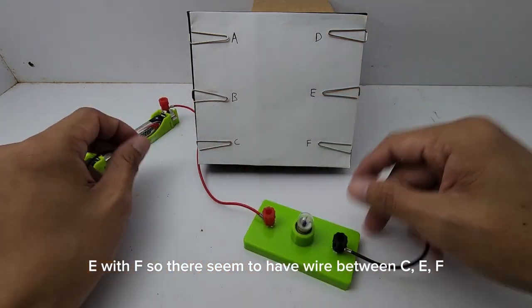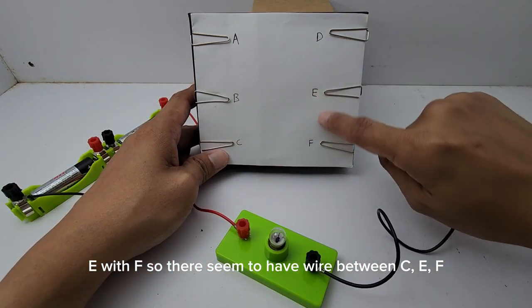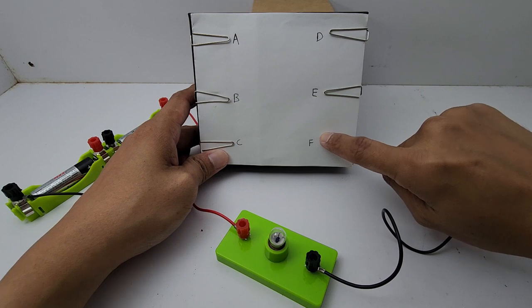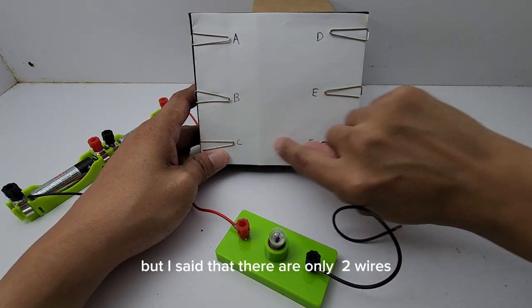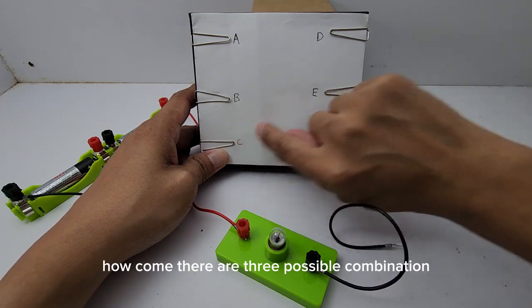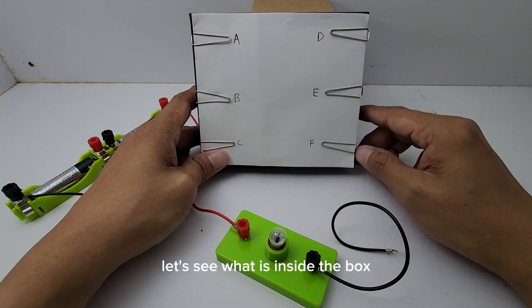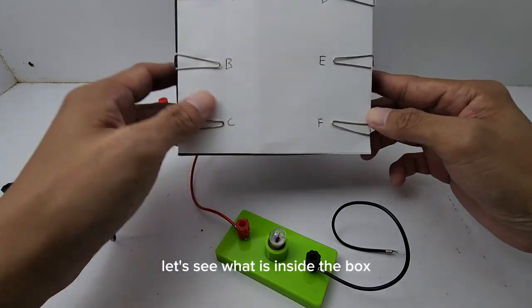There seems to be wires between C, E, F. But I say that there are only two wires. How come there are three possible combinations? Let's see what is inside the box.